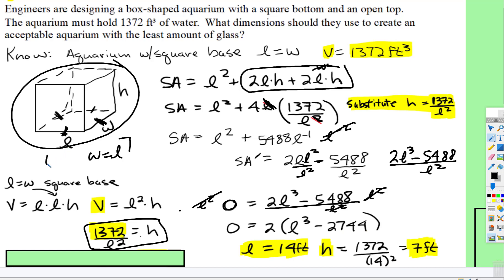So if this length is 14 feet, that means this width is 14 feet. And then we can plug that in. 14 times 14 is 14 squared. Remember what H equals? 1372 divided by 14 squared. You simplify that, you get 7 feet. So our dimensions will be 14 feet by 14 feet by 7 feet.